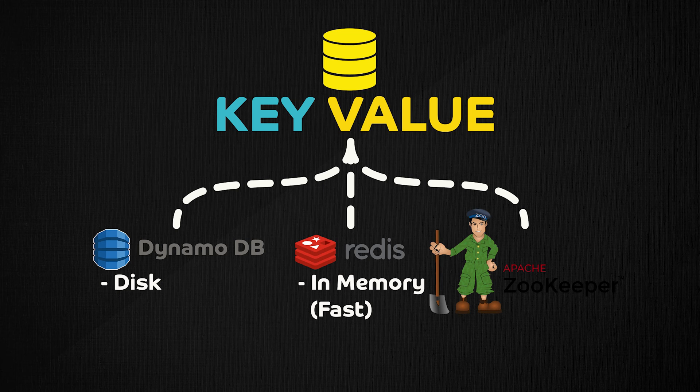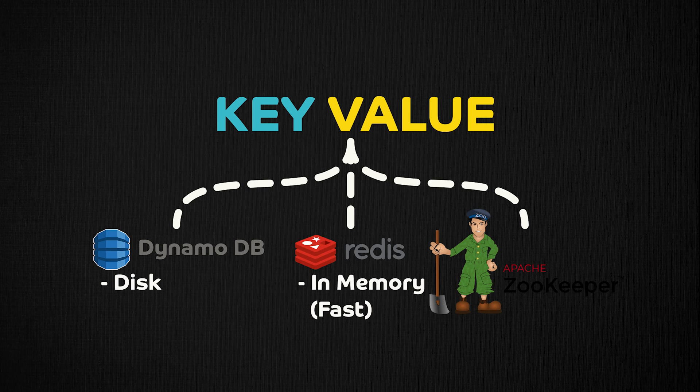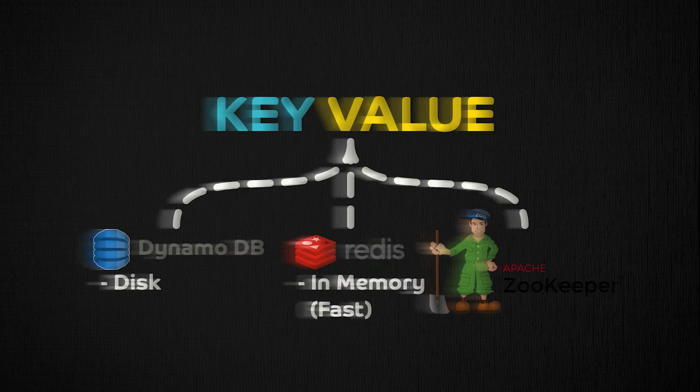For example, if you are using a key value store for caching and you lose your data, it might not be unacceptable for your system. All you will miss is a few cache hits, and once your key value store is back up, you will start refilling the cache and those cache hits again. Some key value stores will give you strong consistency, some will give you eventual consistency. The point is, there are a lot of key value stores out there and you have to pick the one that's going to be most useful for your use case.